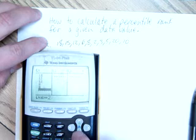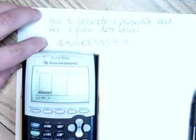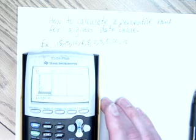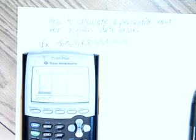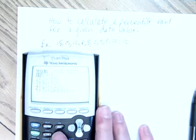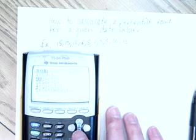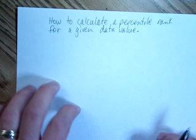What you're going to want to do is type these values into your calculator's list. And you can get to your list by hitting stat, enter. If you have data in your list that you want to get to.